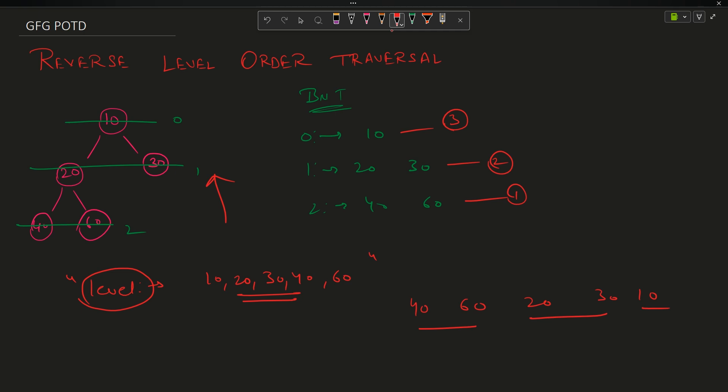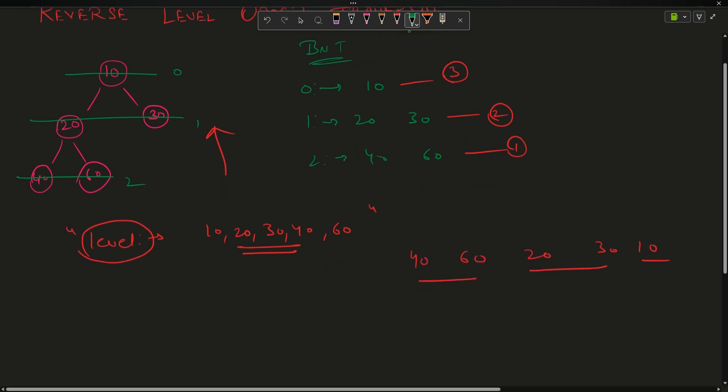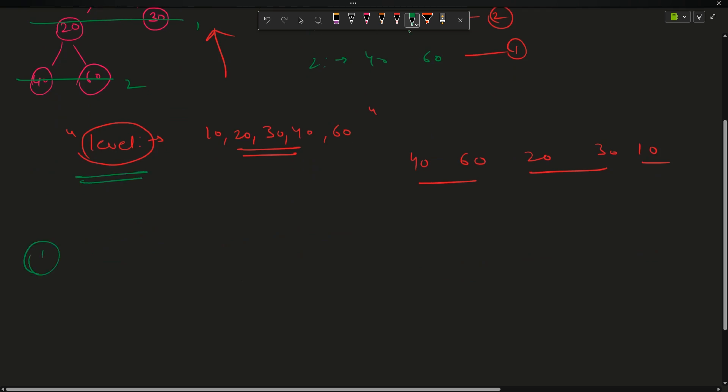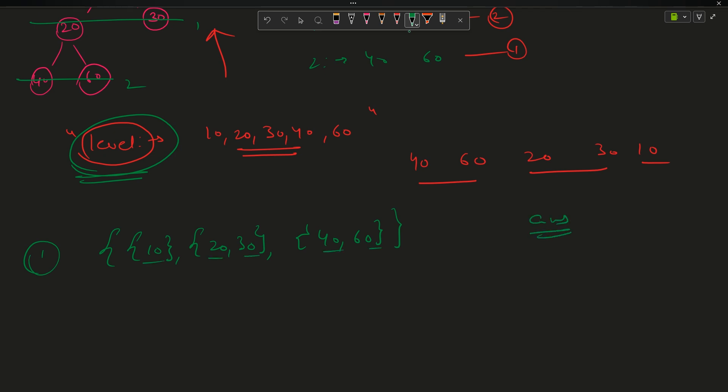So how can we solve it? First approach is, in this video we have discussed how to find out the level wise, that is I will get an answer as 10, 20, 30, 40, 60, that is each level in a subsequent array. Now to solve this, to solve the level order, what I was doing is I was pushing all the elements into my answer array and returning that answer.